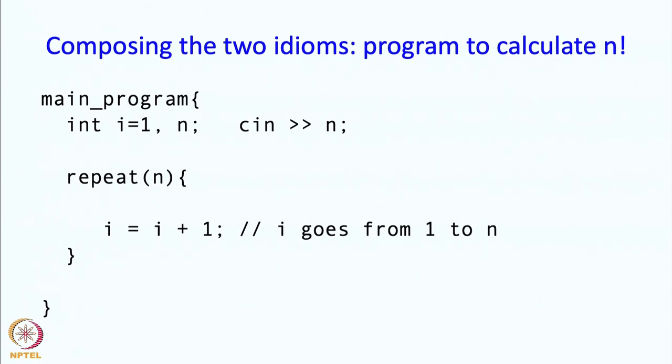Now what do we need to calculate n factorial? Well we want that sequence but we just do not want to leave that sequence alone. We want to multiply all those numbers. So this is easily done by writing a new variable called nfac. It is initially 1 and then we simply write nfac equals nfac times i.